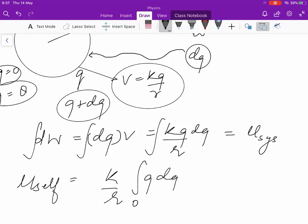Initially, the value of q is zero. Finally, the value of q is capital Q. So, your answer will be kQ²/(2r).